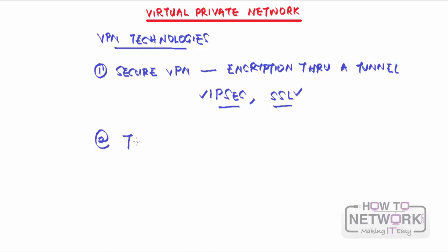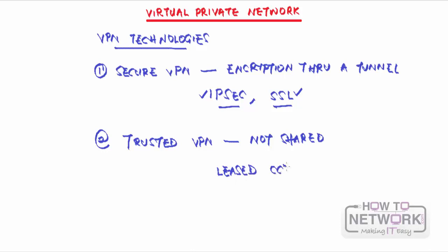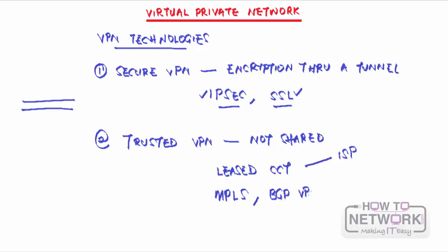Another technology is the trusted VPN, which relies on the fact that you are not using a shared infrastructure. It means that maybe you have a leased circuit, and you rely on the fact that your ISP is not sharing that connection with anybody — you are the only one on that link, so you don't have to add any extra protection. Examples include MPLS and BGP VPN. The third VPN technology is hybrid, which is a mixture of secure VPN and trusted VPN — sometimes known as a tunnel within a tunnel.